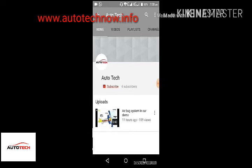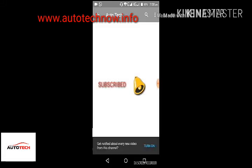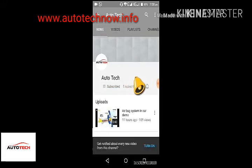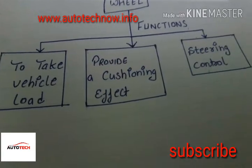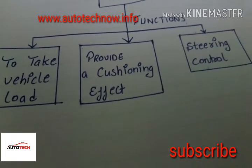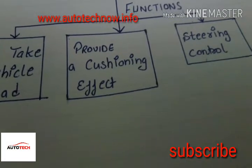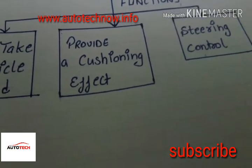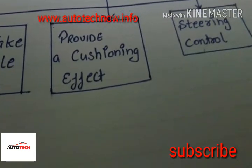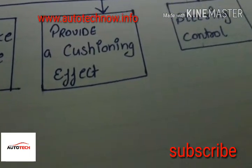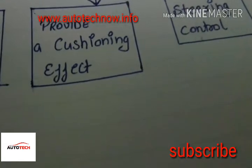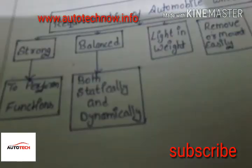Hey friends, subscribe to our channel Auto Tech and press the bell icon to get the latest notifications. Today we are talking about the functions of wheels. The main functions of a wheel are to take vehicle load, provide a cushion effect, and provide steering control.